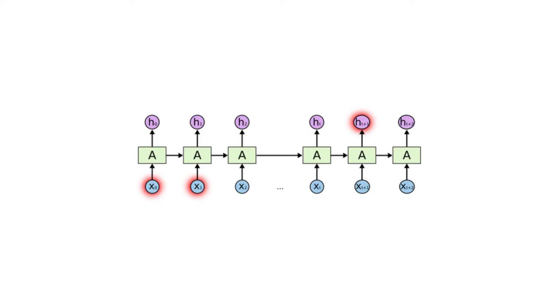In theory, RNNs are absolutely capable of handling such long-term dependencies. A human could carefully pick parameters for them to solve toy problems of this form. Sadly, in practice, RNNs don't seem to be able to learn them. But thankfully, LSTMs don't have this problem.